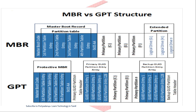In MBR, you can have a maximum of four primary partitions. One of those four partitions can be an extended partition, which can be converted into logical partitions. However, if the primary partition or active partition becomes corrupt, there is no backup mechanism — that is a major disadvantage of MBR.